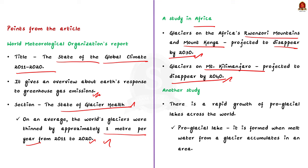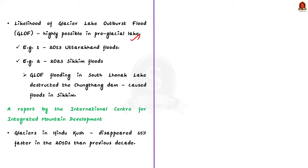Studies also point out a rapid growth of pro-glacial lakes across the world. A pro-glacial lake is a type of lake formed when meltwater from a glacier accumulates in an area. In such lakes, the likelihood of a glacial lake outburst flood is highly possible, posing additional threats to ecosystems and livelihoods. For example, the 2013 Uttarakhand flooding disaster was largely attributed to rapid glacial melt, and more recently, a glacial lake outburst flood in South Lhonak Lake in Sikkim led to the destruction of the Chongtang Dam and triggered severe flooding in the region.